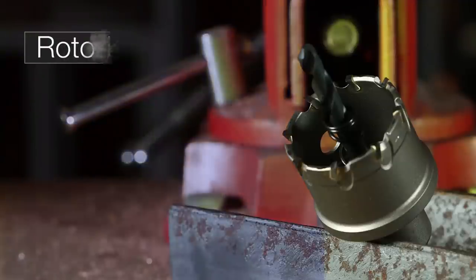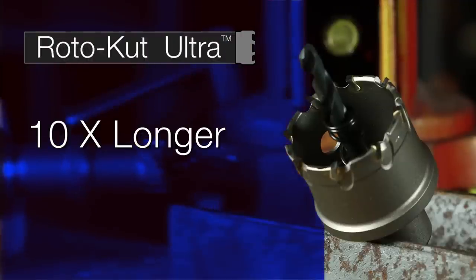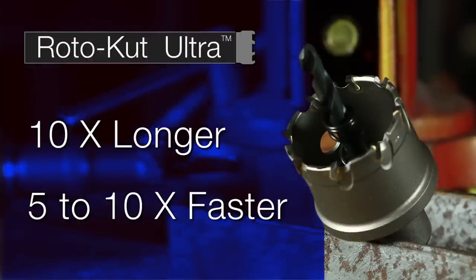The math is simple. Roto-Cut Ultra lasts up to ten times longer and cuts five to ten times faster.